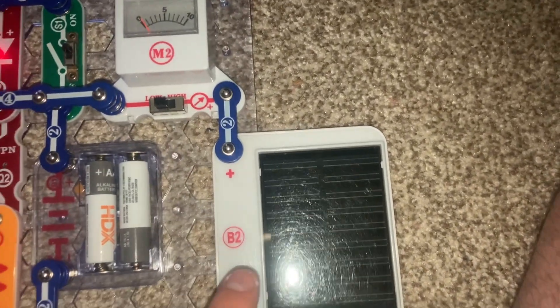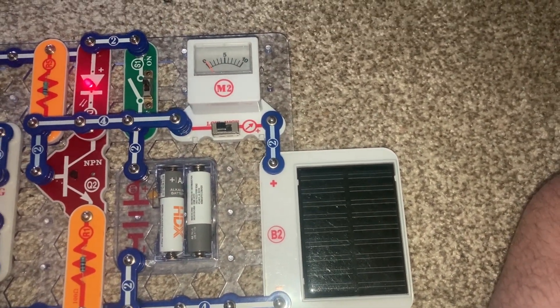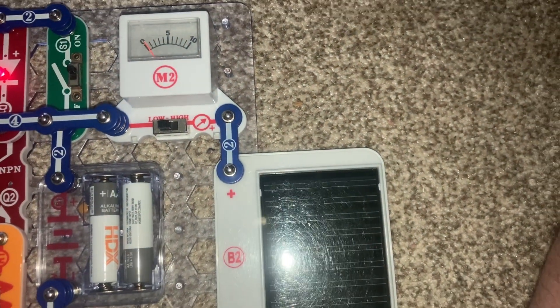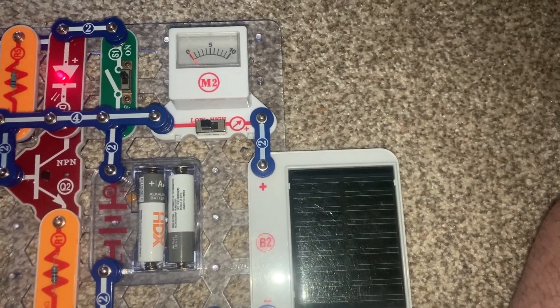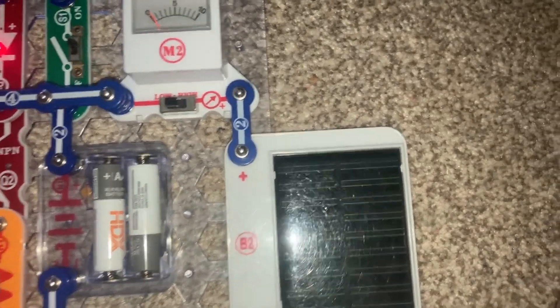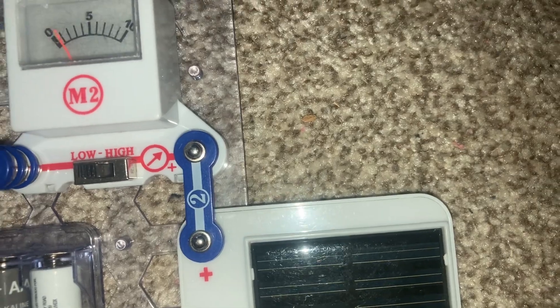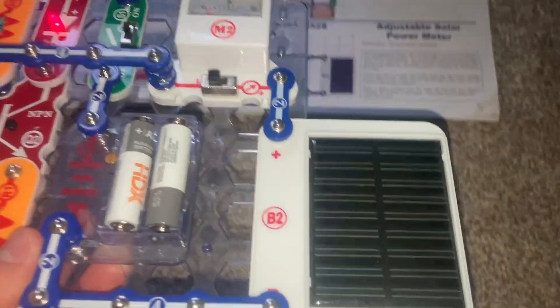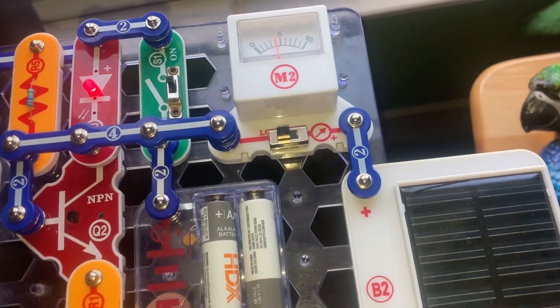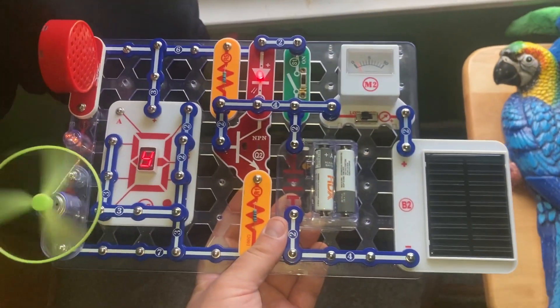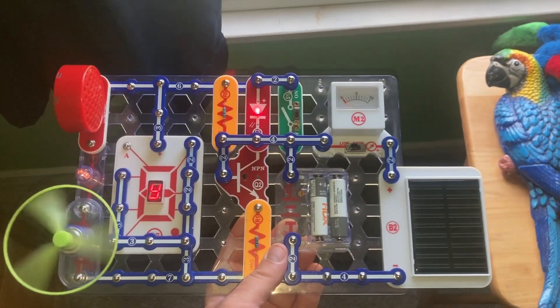And then when you shine enough light on the solar cell, which I will explain about in a couple projects, the meter will deflect to the right. Now, it is better to use natural light than artificial light for the solar cell. But the meter will deflect farther to the right, the more light that shines on the solar cell. Very carefully, I'm actually going to take it to a window because the sun is shining. And you can see that the meter deflects a lot further. And there you have it with the six forms of output in snap circuits.